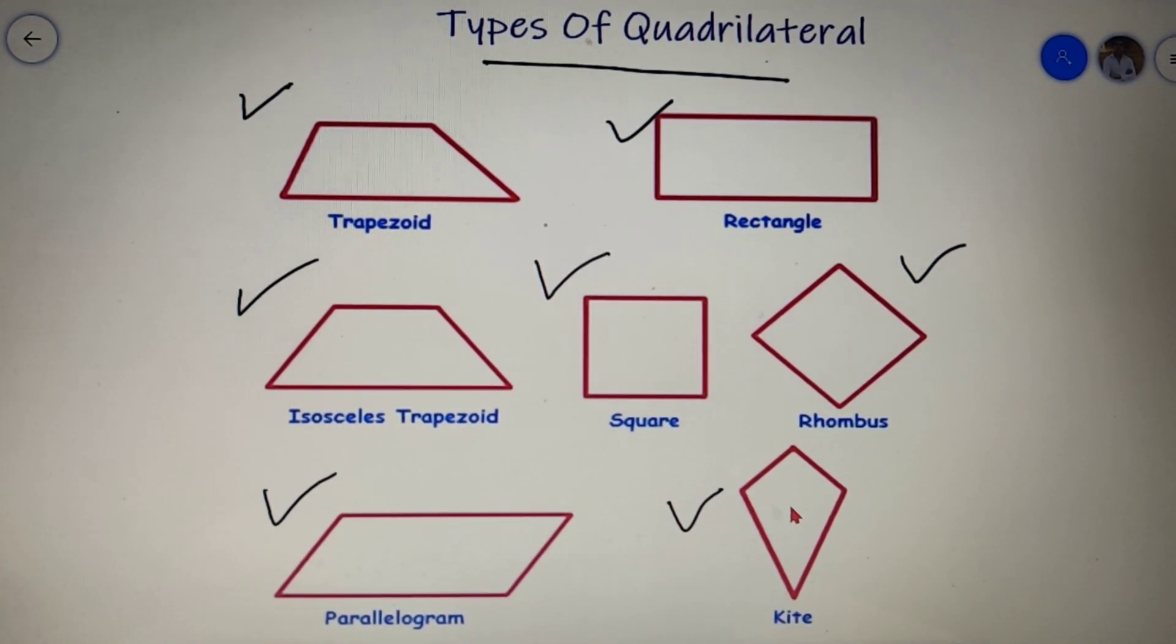Except for the last quadrilateral that is a kite, all the other six quadrilaterals are very important because all the questions in the exam are generally based on these six quadrilaterals. A trapezoid is more commonly known as a trapezium.